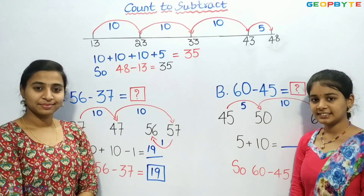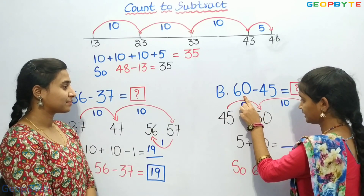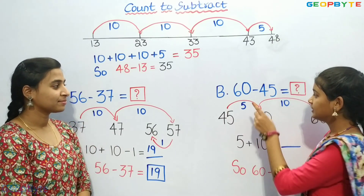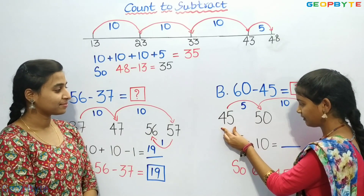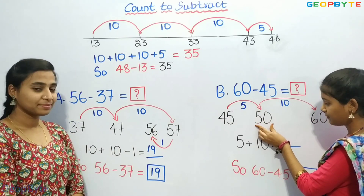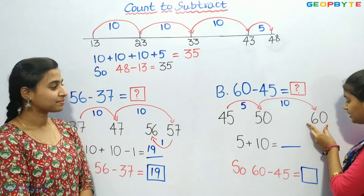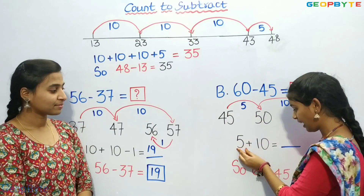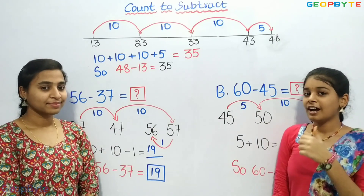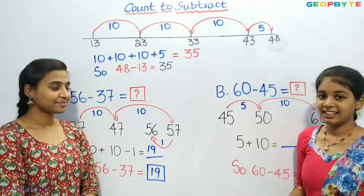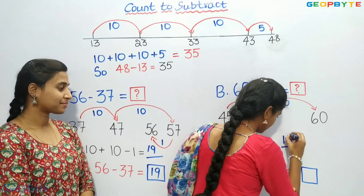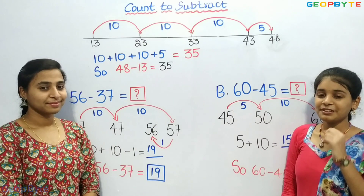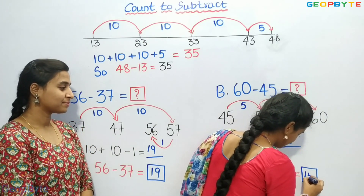Children, now let us see the next example. We have 60 minus 45. See here: 45 plus 5 is equal to 50. 50 plus 10 is equal to 60. We added 5 and 10, which means 5 plus 10 is equal to 15. So, 60 minus 45 is equal to 15.